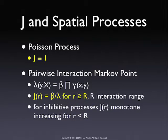For the Poisson process the J-function is 1, so empirically you compare it to 1 using a randomization envelope. For more complex pairwise interaction point processes — the modern models estimated only by simulation — there are parameters: the intensity lambda, a gamma parameter for two points x and y, and a beta parameter. As it turns out, the J-function at a given distance is exactly the ratio between gamma and beta, giving us a direct connection between something measurable and the formal model parameters.